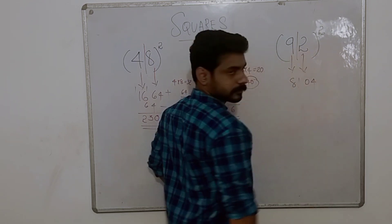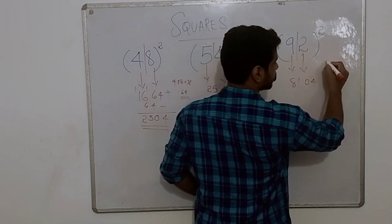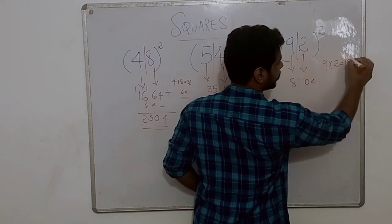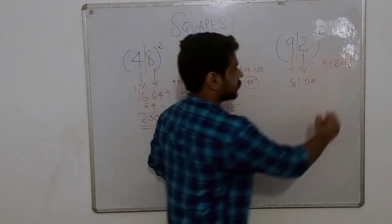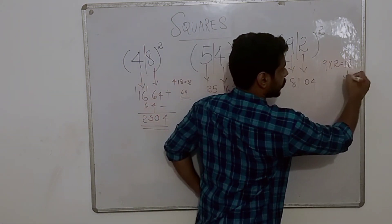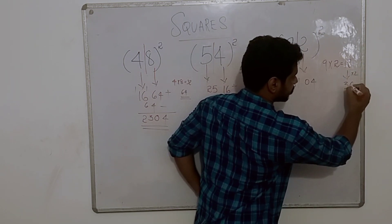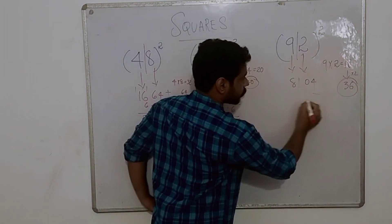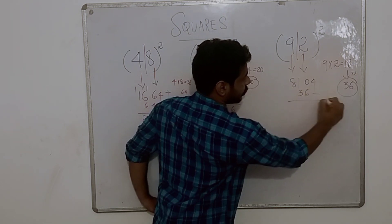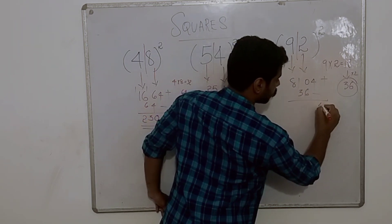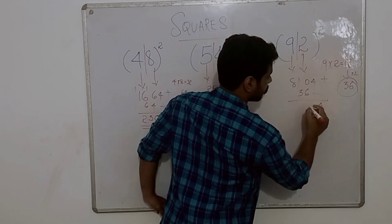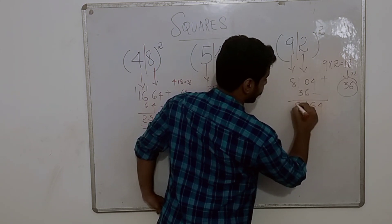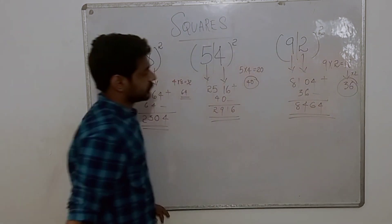Next, 9 into 1 we get 9. We get 18, right? 18 doubled is 36. So 36 — unit place is 3 and 6. We're going to add this number: 4 plus 0 is 4, 0 plus 6 is 6, 1 plus 3 is 4, and 8. We get 8464.